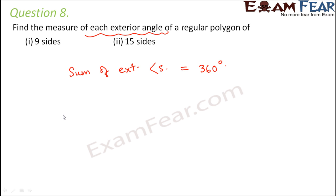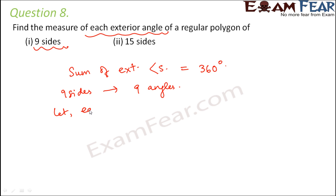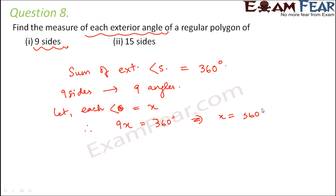We have to find out the measure of each exterior angle. For a polygon with n sides, it will have n number of angles. So if the polygon has 9 sides, it will have 9 angles. Let each angle equal x. Then x added 9 times is 9x, so 9x = 360°, which means x = 360 ÷ 9 = 40 degrees. Therefore, the measure of each exterior angle is 40 degrees.